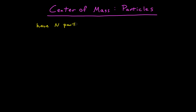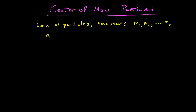Let's say we have n particles — a discrete number of n particles greater than one. They have masses m1, m2, dot dot dot, m sub n. And they're at positions which we'll call r sub 1, r sub 2, dot dot dot, r sub n. So imagine we've assumed some sort of coordinate system here, and we have these particles — say 3 of them — with position vectors r1, r2, r3, etc.